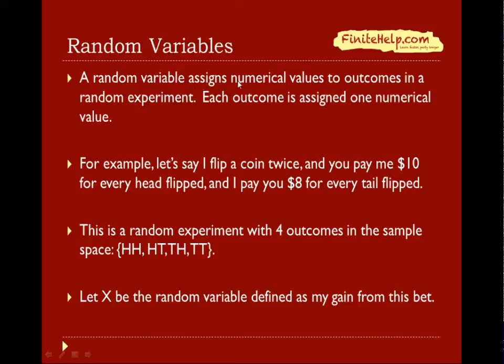The definition of a random variable is: a random variable assigns numerical values to outcomes in a random experiment. Each outcome is assigned one numerical value.